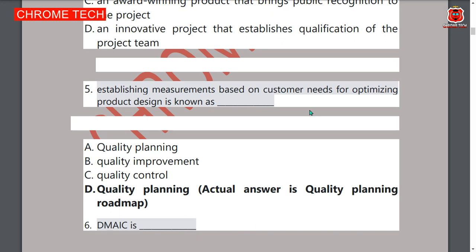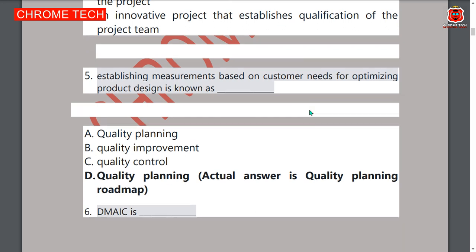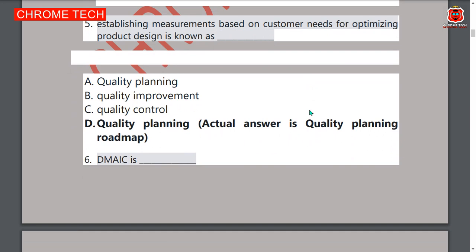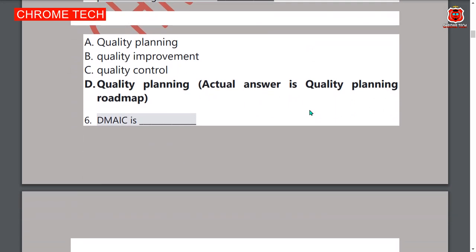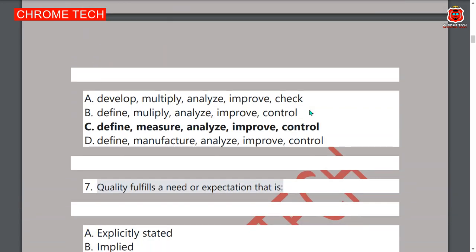The correct answer is quality planning roadmap, option D. Sixth question: DMAIC is — option C is the correct answer: Define, Measure, Analyze, Improve, Control.